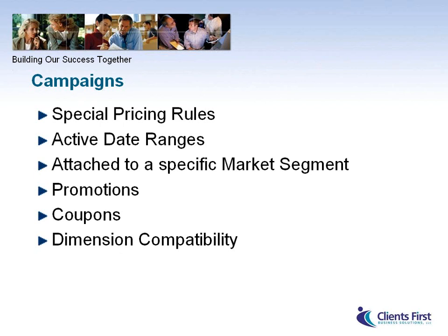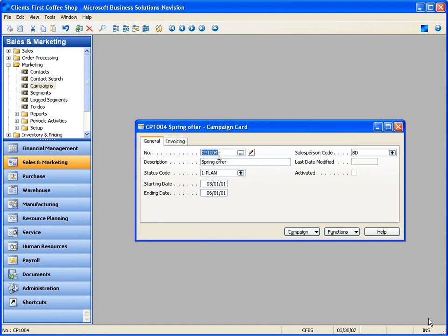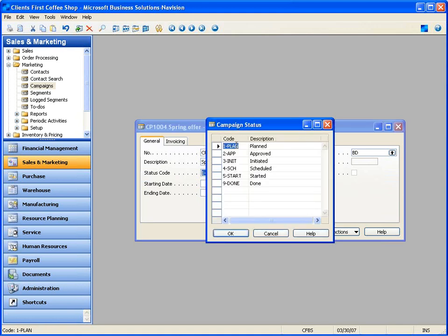That opportunity was associated with a campaign. Campaigns can track activity, contain special pricing and agreements, promotions or coupons, with an active date range. They are attached to a specific market segment and we can store dimensions to publish dimension information to reporting — filtering revenues, costs, and profit margins based on participation in a specific campaign. Let's call up a campaign from Marketing. Campaign 1004 is my spring offer. A campaign can have statuses for tracking and filtering: planned, approved, initiated.